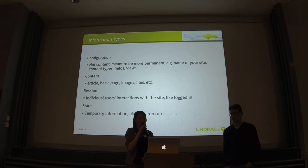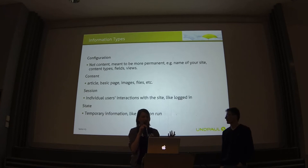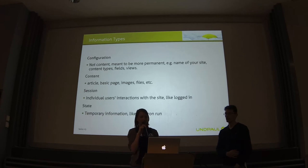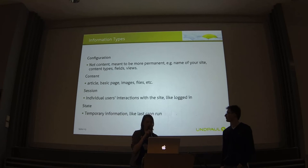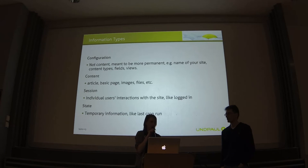These are some information types in Drupal 8 as well as Drupal 7. Configuration is everything that's not content — the name of your site, content types, fields, and views. This is a really nice thing in Drupal 8: everything you add — a new content type, a new block type, any field — is automatically saved to a file. It's not in the database anymore.